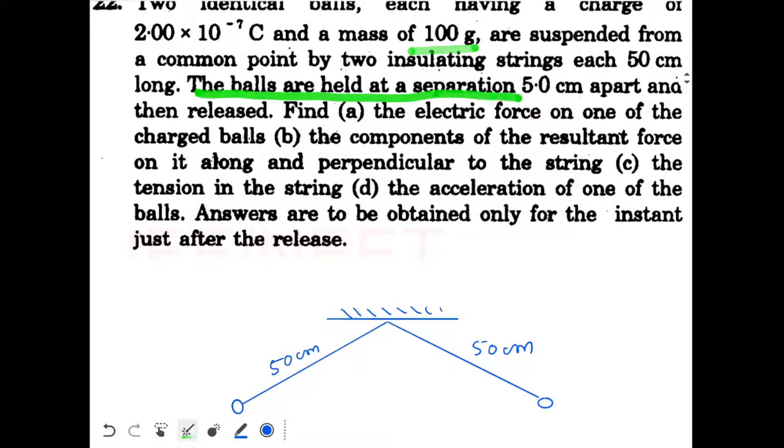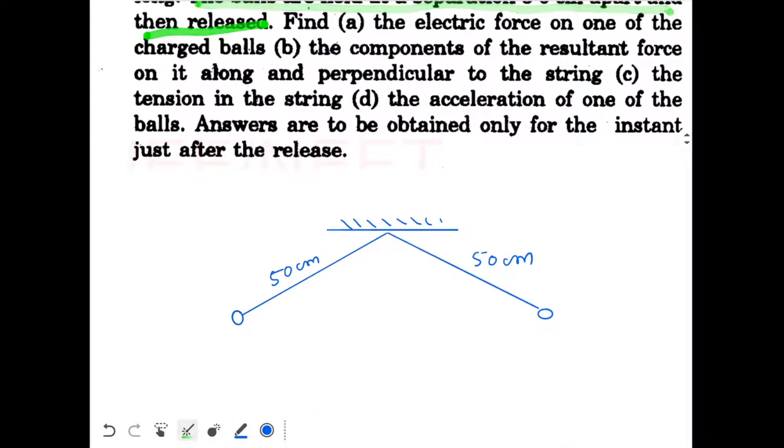The balls are held at a separation of 5 cm apart and then released. So the horizontal separation between the balls is 5 cm. They are held in this position and released. The triangle doesn't look really proportional to the length mentioned but that's okay. We are not worried about the accuracy of the diagram.